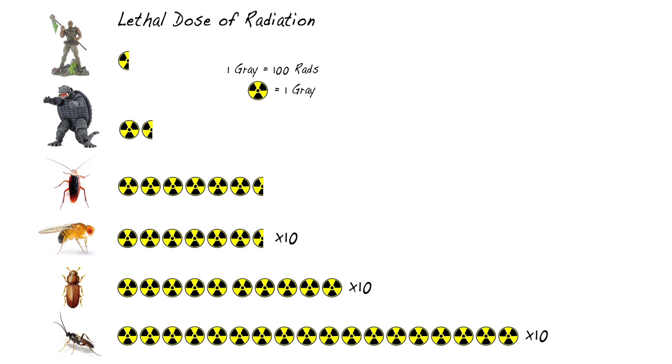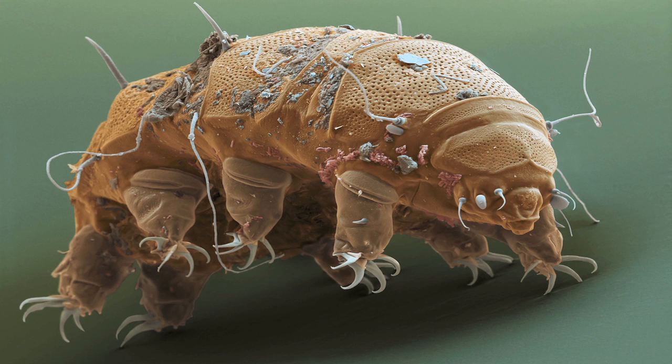The fruit fly can take up to 10 times that much. The flower beetle and parasitic wasps, even more. Then we get to the tardigrade, or water bear. These guys are half a millimeter long and can take a lot of punishment.